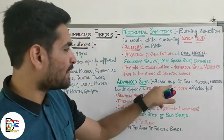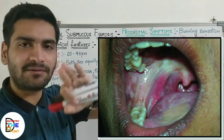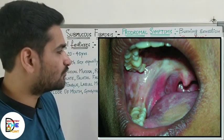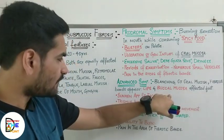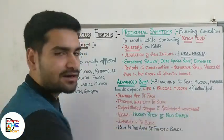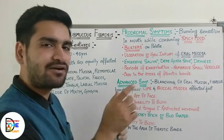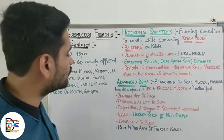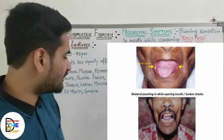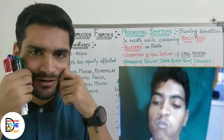Moving to advanced symptoms: blanching of the oral mucosa is seen. It was previously thought that the retromolar area and palate are affected first, but now it is known that the lips and buccal mucosa are clinically affected first. Blanching of the oral mucosa is observed, and the face or cheeks will appear sunken. There is also inability to blow because fibrotic bands cause loss of flexibility and resiliency of the oral mucosa.